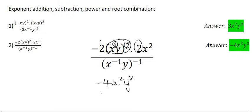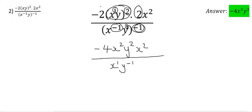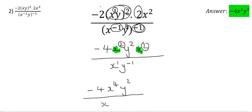This 2 has already been used up, so we just say x squared. At the bottom, we multiply those: minus 1 times minus 1 is just 1, so it's x to the power of 1. Then the y currently has an exponent of 1, and multiplying gives us y to the power of minus 1. At the top we see there is an x and another x, so we add those exponents, giving minus 4, x to the power of 4, and y to the power of 2. At the bottom we just have x to the power of 1 and y to the power of minus 1.